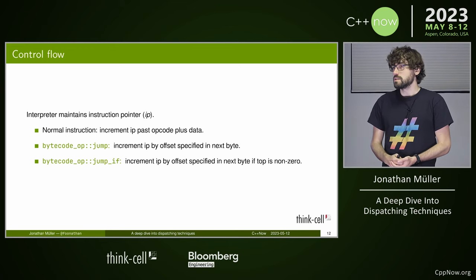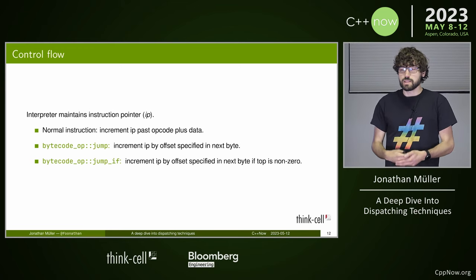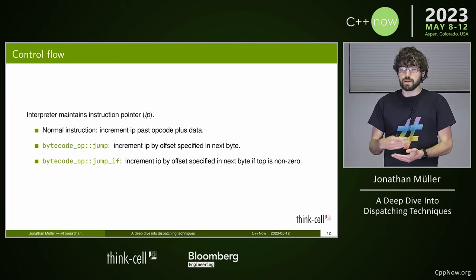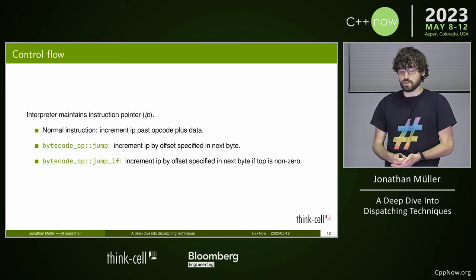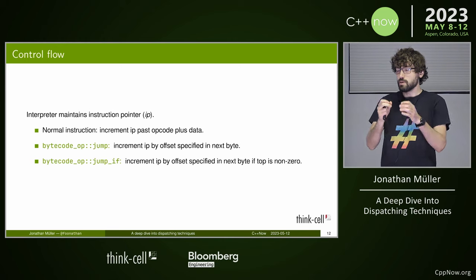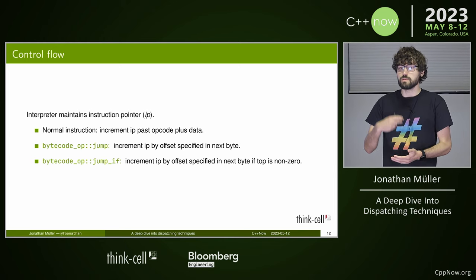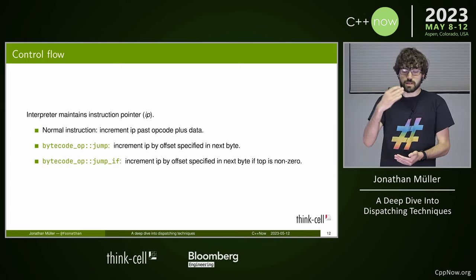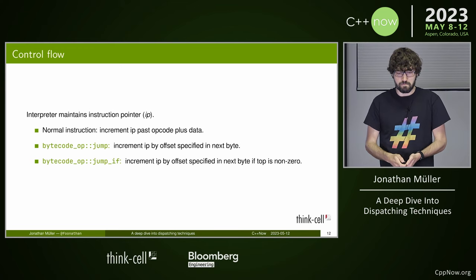We also need conditional jumps; otherwise our loop would be infinite. A conditional jump increments the instruction pointer by an offset, but only if the top of the VStack is non-zero. It pops one value from the VStack — if it's non-zero, it jumps by offset; otherwise it skips past the jump instruction and continues normally.